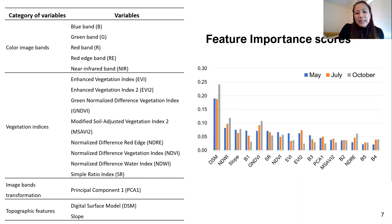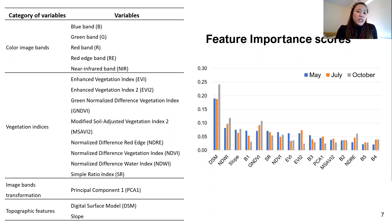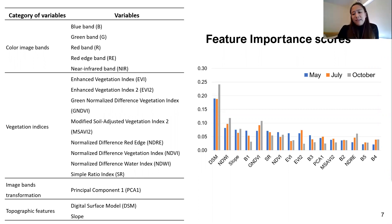Here you can see the feature importance scores as computed by random forest for each single field campaign. These values provide insight into the relative importance of each feature when making a prediction, giving us an idea of which features may be most or least relevant. The ranking shows the importance of elevation, which is a topographic variable.